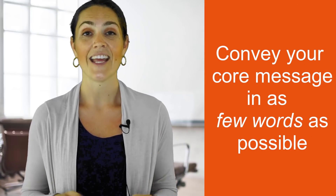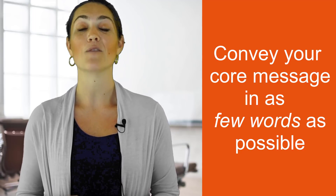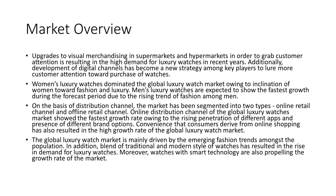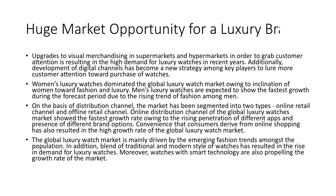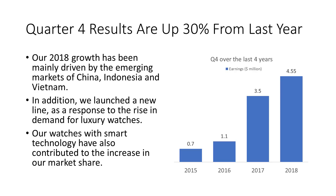Think about what you want your slide to say and how you can convey that in as few words as possible. A great place to start is with your title. Instead of saying 'market overview,' say 'huge market opportunity for a luxury brand' — that's ultimately what you're trying to tell people. Or instead of 'quarter four results,' say 'quarter four results are up 30%.' Notice how clarifying your message in the title changes what you need to present to back it up.